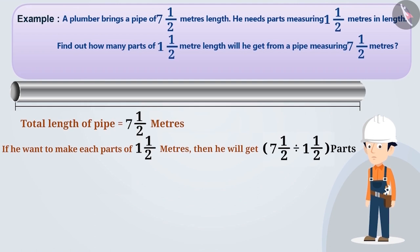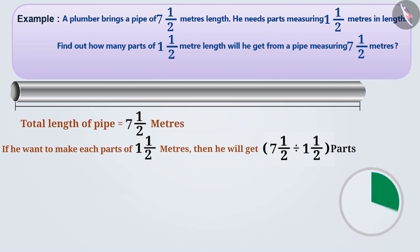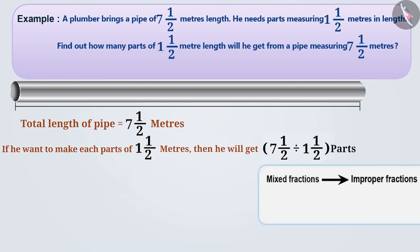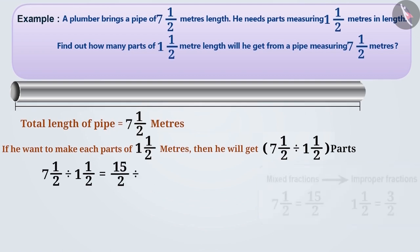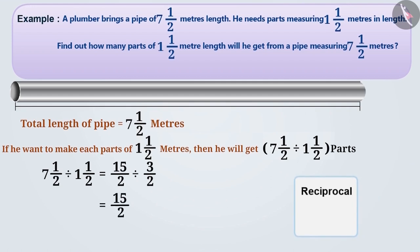Can you tell us how this division can be solved? Think about it. If the division has decimal numbers, we have to first convert them into improper fractions. Here, 7.5 as an improper fraction will be 15 by 2, and 1.5 will be 3 by 2. That is, 7.5 divided by 1.5 is equal to 15 by 2 divided by 3 by 2. To solve this, we will keep the first number exactly the same and multiply it by the reciprocal of the second number. Here, the reciprocal of 3 by 2 is 2 by 3.